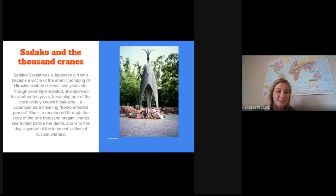Sadako Sasaki was a Japanese girl who became a victim of the atomic bombing of Hiroshima when she was just two years old. And so from that, she had severe radiation poisoning and became known as a hibakusha, a Japanese term for bomb affected person. She's remembered through the story of the 1,000 paper cranes because she folded a bunch of them before her death and is today a symbol of innocent victims of nuclear warfare.